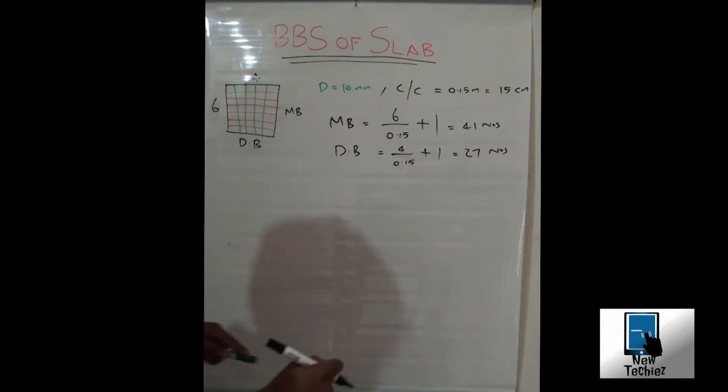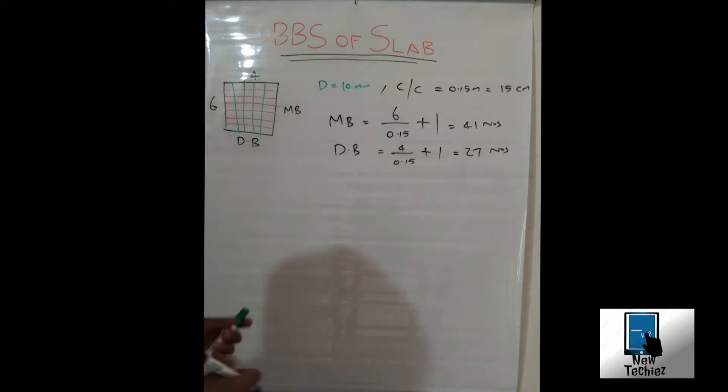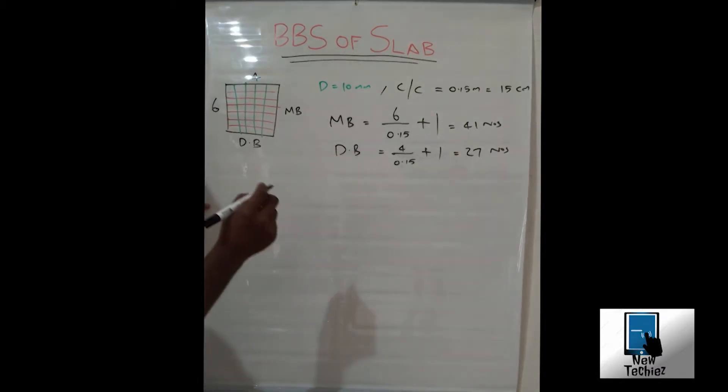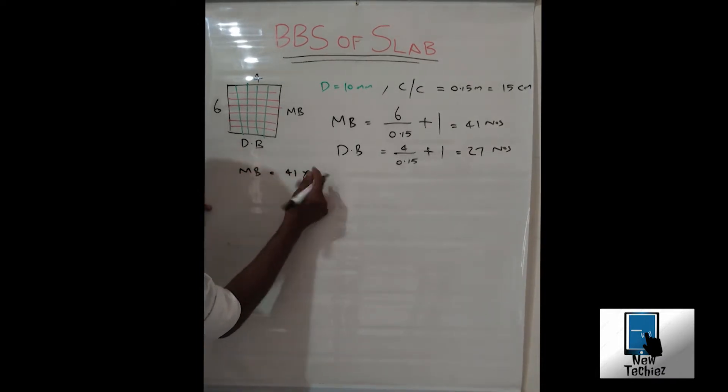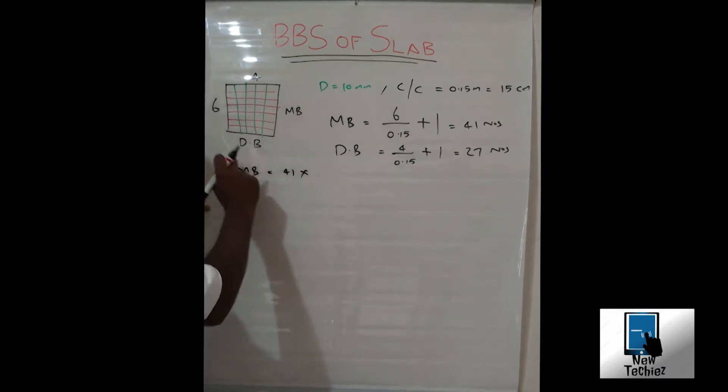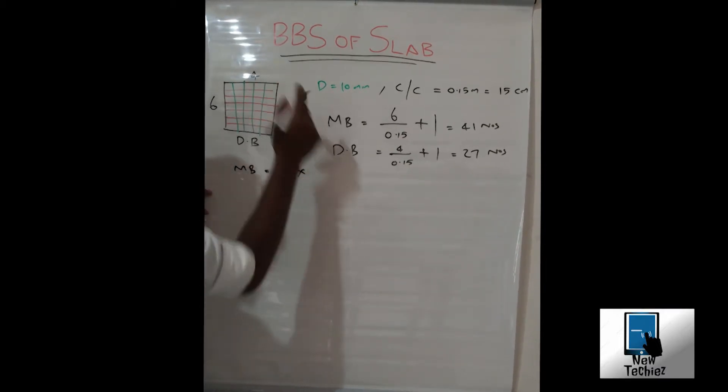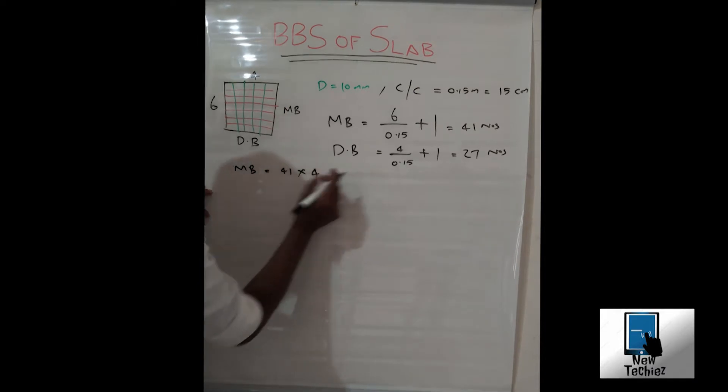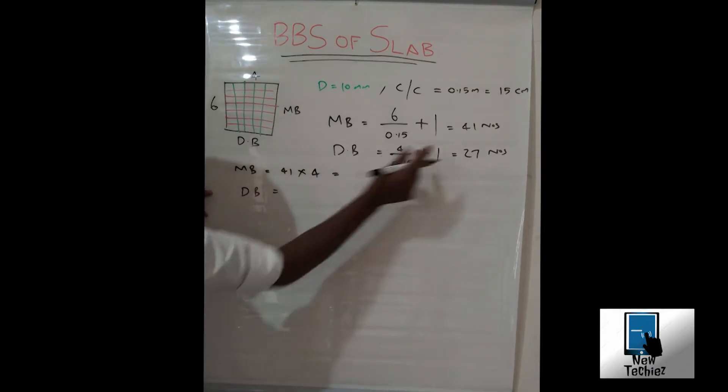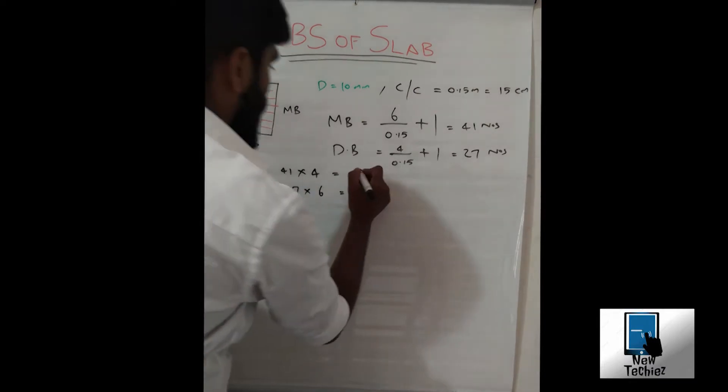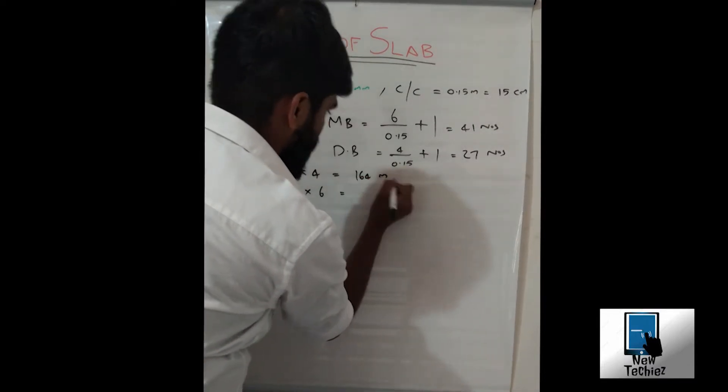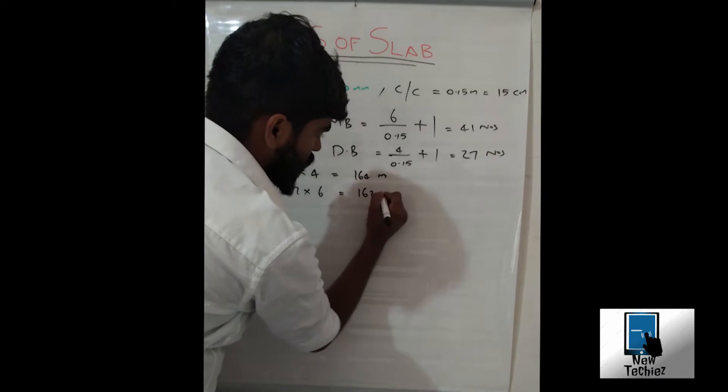Now we want to calculate the total length. For main bar, there are 41 numbers, so 41 into the total length, that is four meter. For distribution bar we need 27, and 27 into the length six meter. We get the value of 164 meter and 162 meter.